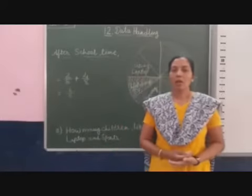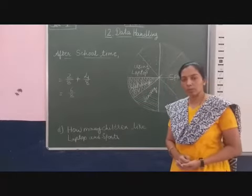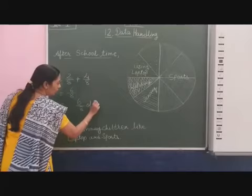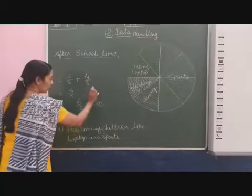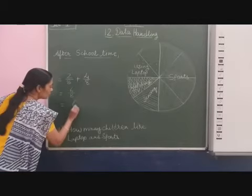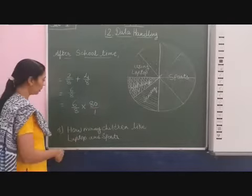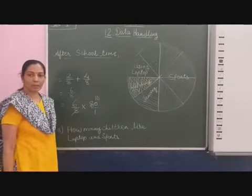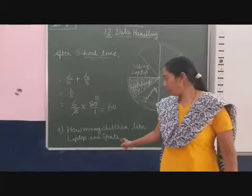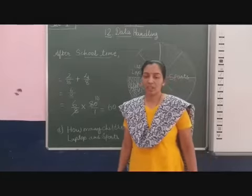Six-eighths of 80 students like the activities laptop and sports, out of 80. So we can write this as six-eighths multiplied by 80. 80 divided by 8 equals 10, and six multiplied by ten equals sixty. So there are sixty students — sixty children like laptop and sports after school hour.